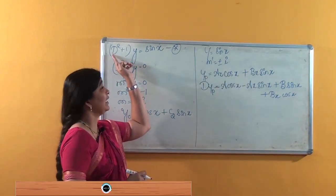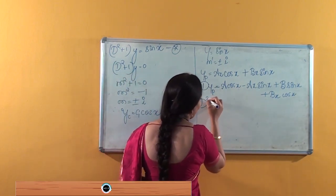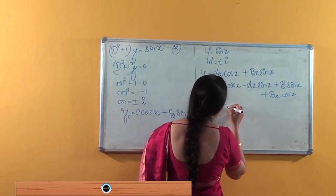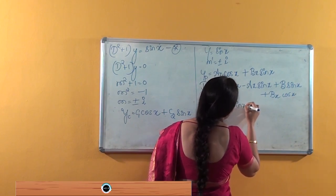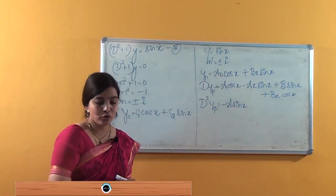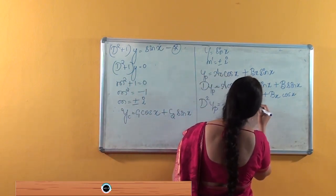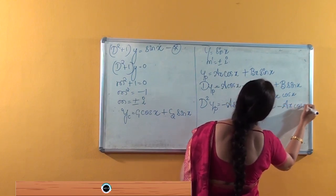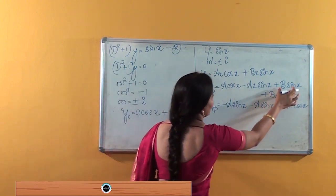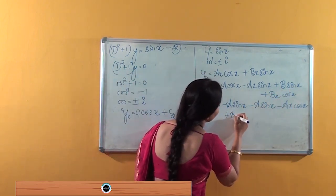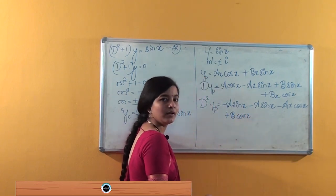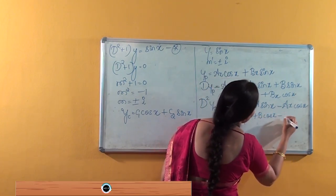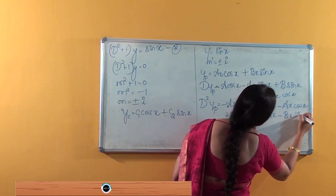We need d²yp, so we differentiate again. Applying the product rule again: d²yp = −A sin x − A sin x − Ax cos x + B cos x + B cos x − Bx sin x, which simplifies to −2A sin x − Ax cos x + 2B cos x − Bx sin x.